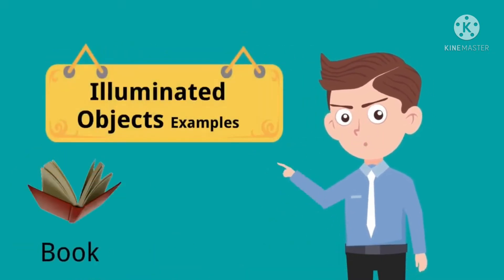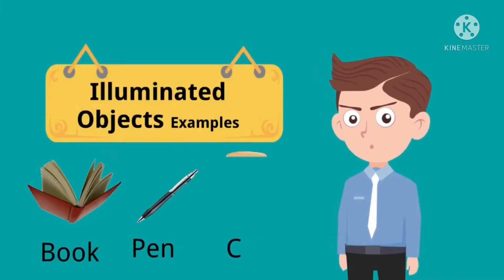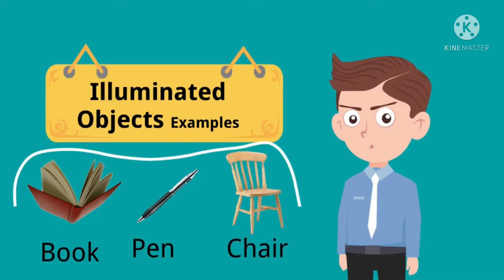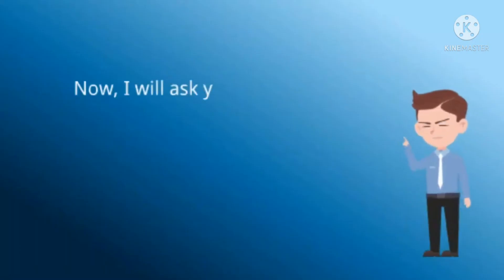And illuminated objects — examples: a pane, or a chair, or stones, anything which cannot give light, which cannot produce light but is only able to reflect light. These are known as illuminated objects.